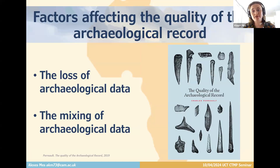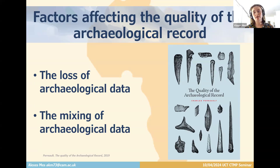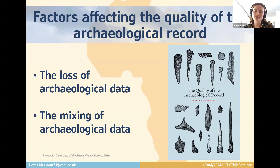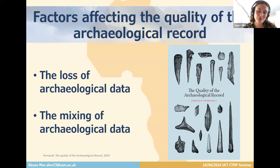There are two broad categories affecting the quality of the archaeological record: the loss of archaeological data and the mixing of archaeological data. Both of these issues massively constrict the scale at which we're able to ask and answer questions concerning the material record of our past. There's a very interesting book by Charles Perrault, 'The Quality of the Archaeological Record,' that delves into these issues in detail — if you're interested in mathematically defining the scale at which we can answer questions about the past, it's a very interesting read.